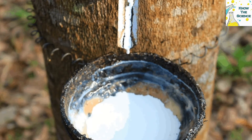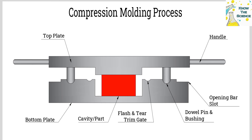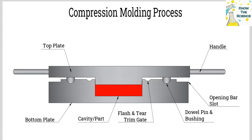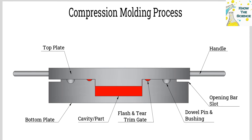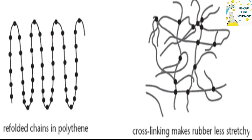The vulcanization process typically begins by mixing raw rubber with sulfur and other additives like accelerators, activators, and fillers. The mixture is then heated, often in a mold or under pressure, to temperatures around 140 to 160 degrees centigrade.